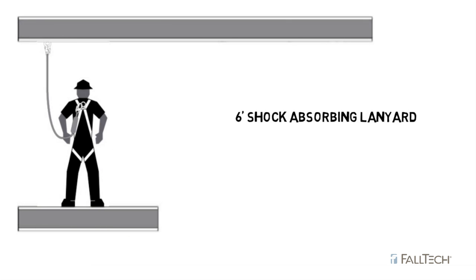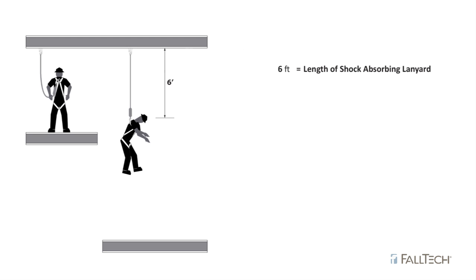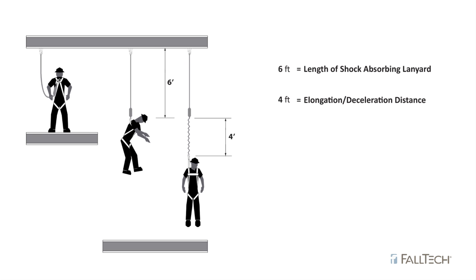With a shock absorbing lanyard, typical clear fall calculations when connected to an overhead anchorage take into account the length of the shock absorbing lanyard, the deceleration distance, which is the maximum allowable amount of energy absorber that may pay out during a fall event.